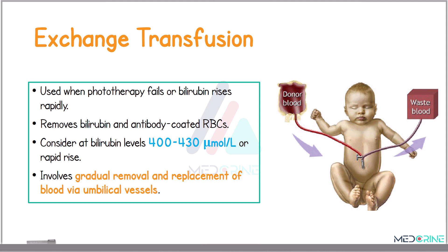When phototherapy fails or bilirubin rises rapidly, we move to the second management strategy, which is exchange transfusion. Exchange transfusion is used when phototherapy fails or bilirubin levels rise rapidly. It removes the bilirubin and the antibody-coated red blood cells. You need to consider exchange transfusion at bilirubin levels between 400 to 430 micromoles per liter or when there is a rapid rise of bilirubin in blood. It involves a gradual removal and replacement of blood via the umbilical vessels.